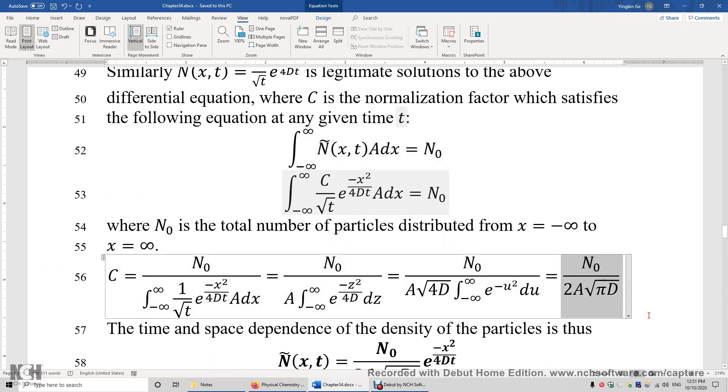C is N_0 over 2A times the square root of πD. So this normalization factor ensures the total number of particles from position negative infinity to positive infinity is N_0.